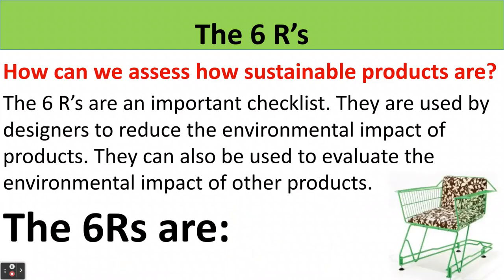How can we assess how sustainable products are? We can use the six R's. They are an important checklist used by designers to reduce the environmental impact of products. They can also be used by consumers to evaluate the environmental impact of products they might buy.